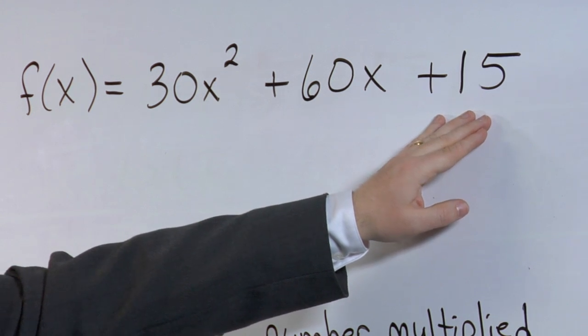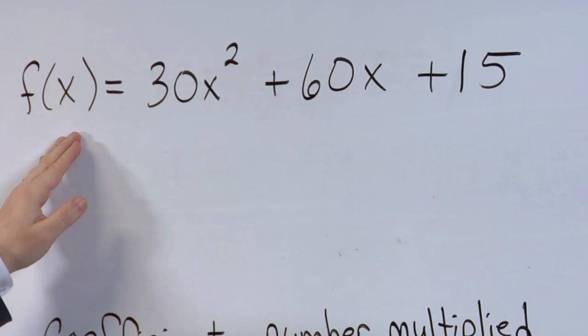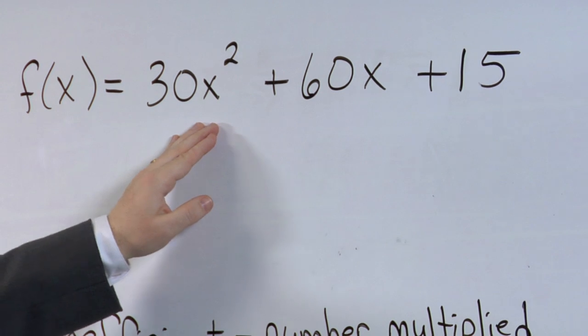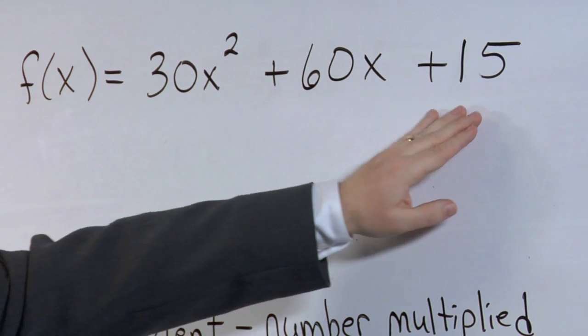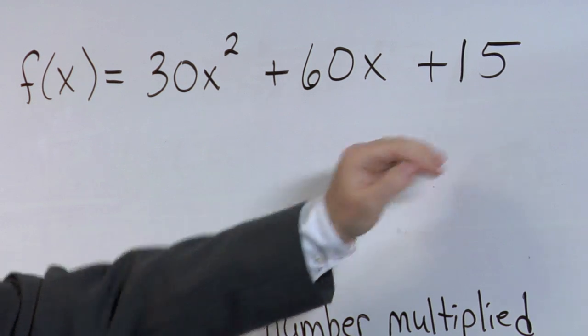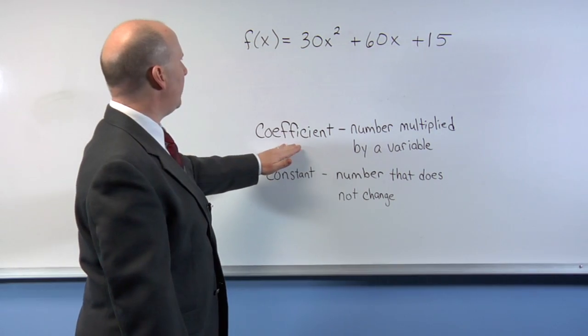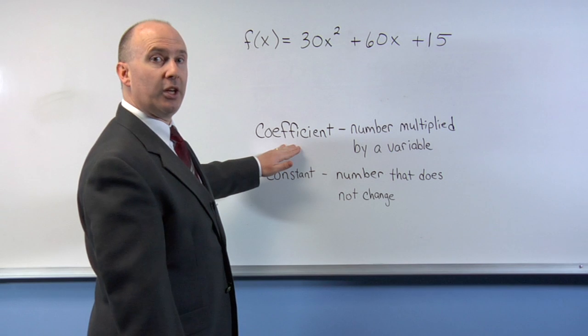It's a constant. If I plug in 2 for x, this value changes, this value changes, but this value remains 15. So therefore, 15 itself cannot be a coefficient.